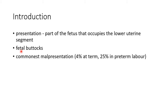Breech presentation is when the fetal buttocks occupies the lower uterine segment. It is the commonest malpresentation. It occurs in 4% of term labor and in 25% of pre-term labor.